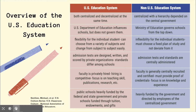Admissions tests in the United States are designed, written, and scored by private organizations. For example, the test to get into university here — you can take either the ACT or the SAT — and both of those are designed and scored by private organizations rather than our government. The standards by which you need to score are different among different universities and schools.